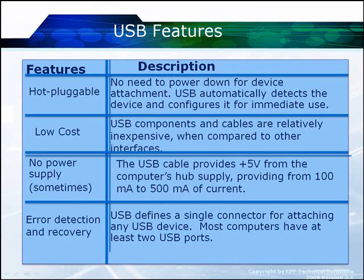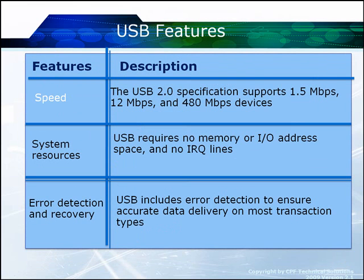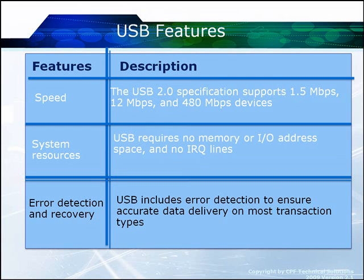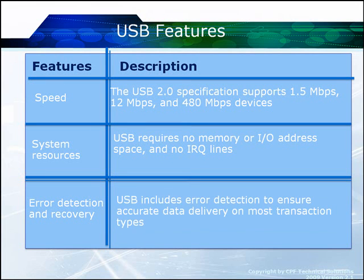Error detection and recovery: USB defines different error mechanisms and we'll look at those. USB 2.0 supports 1.5, 12, and 480 megabits per second — low, full, and high speed. System resources were an issue in older platforms where each device needed its own IRQ line and address space, and we were running out of those resources. USB shares one resource set. Error detection ensures accurate data delivery on all but one transaction type, with different levels of error detection and recovery.